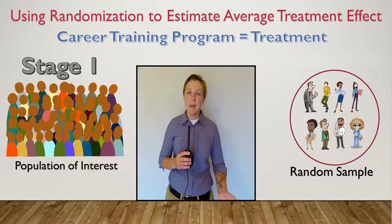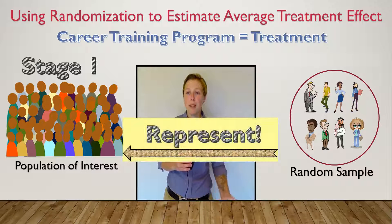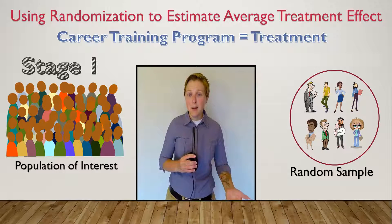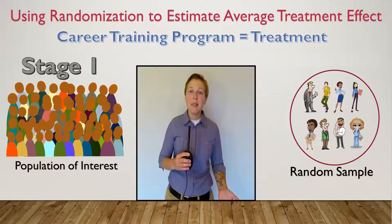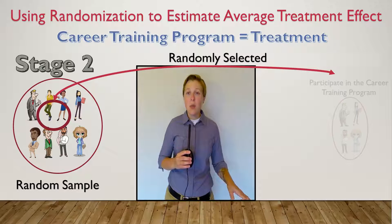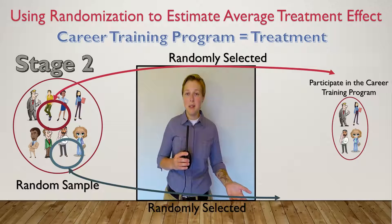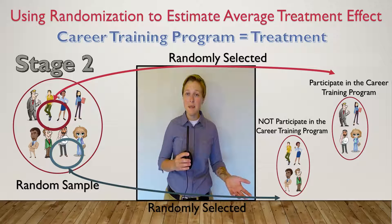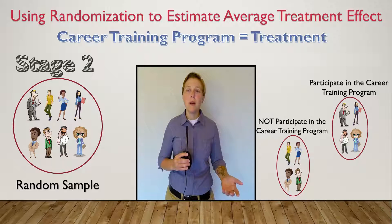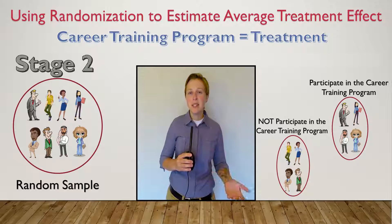A randomly selected sample from the population of interest will hopefully represent the population, meaning they will have similar races, similar family sizes, incentives to work, and any other factors that may affect the outcome — in this case, their income. Once we have a randomly selected sample, the second stage is to randomly select who gets the treatment, or career training program, and who does not. The idea is that due to randomization, each group will be similar, and we won't have the problem where one group has harder workers or there are fundamental differences between the two groups.